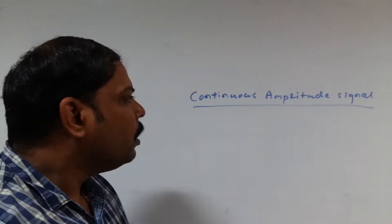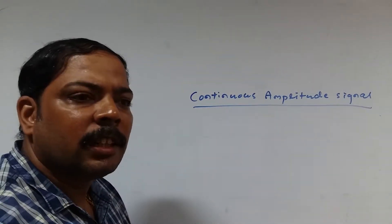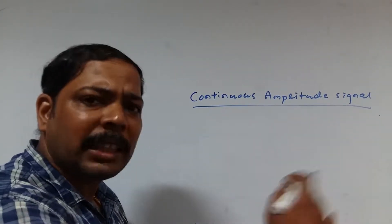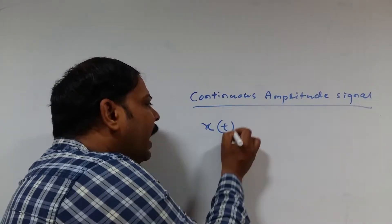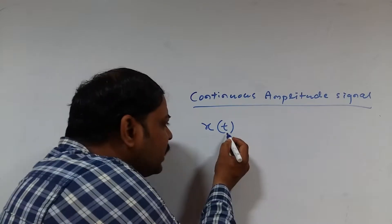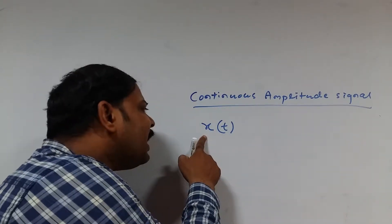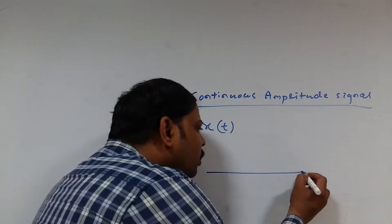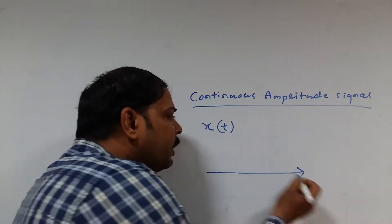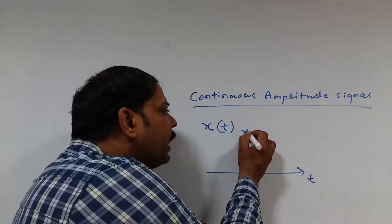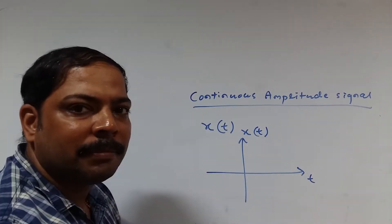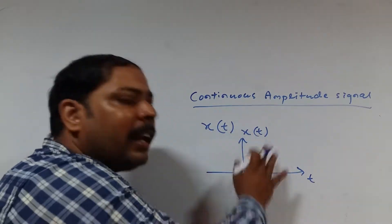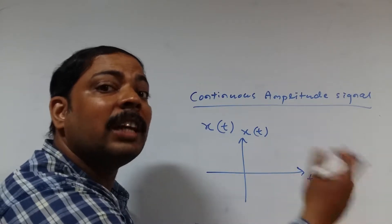In this topic I have already discussed whenever you are dealing with a signal, any signal, you can represent the signal mathematically as x is a function of time. Here t is basically known as the independent variable and x is basically known as the dependent variable. That means x depends on t. Whenever you plot, over the abscissa you take time and over the ordinate you take x, which is x as a function of time. Over this plane, whatever plot you draw is basically known as a signal plot.